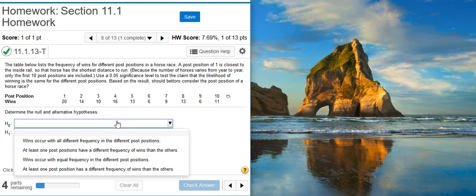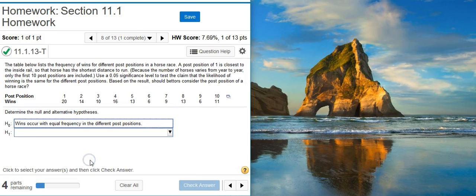So here we're going to look at the different options and select the one that has what we want in it, which is that everything is the same. Wins occur with equal frequency. That's the one we want.